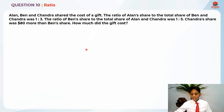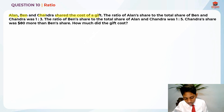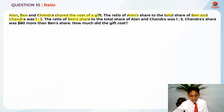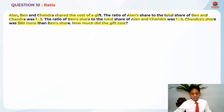This is question 10 and it is testing us on ratio. Let's read the question first. Alan, Ben and Chandra shared the cost of a gift. The ratio of Alan's share to the total share of Ben and Chandra was 1 is to 3. The ratio of Ben's share to the total share of Alan and Chandra was 1 is to 5. Chandra's share was $80 more than Ben's share. They're asking us how much did the gift actually cost.